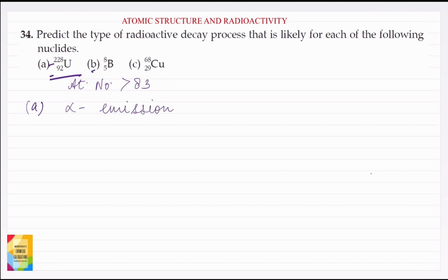Next is Part B: Boron with atomic mass 8 and atomic number 5. So mass number is 8 and atomic number is 5.